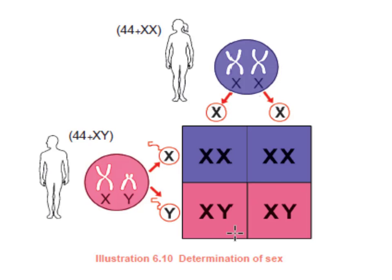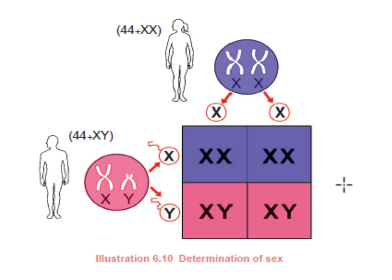So we can determine the male and female child. A child with XX chromosomes is a female child, and a child with XY chromosomes is a male child. There is a 50% chance of a male child and a 50% chance of a female child.